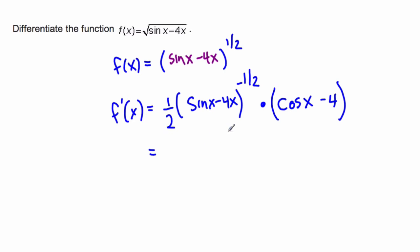And let's also simplify it a little bit. We can take the 1 over 2, and then the square root of sine x minus 4x. Because the problem was given to us in a root, it's sometimes nice to leave it back in a root.